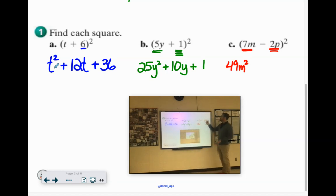So I think 7 times negative 2 would be negative 14. We have the M and the P. But remember, we need to multiply that by 2. So we'll have negative 28MP. It's always plus. And then you square the last term. 2P times 2P is 4P squared.